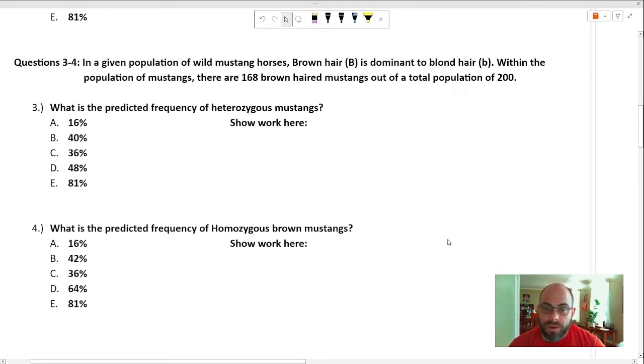And so questions number three and four. In a given population of wild mustang horses, wild mustang - I love all the adjectives in this worksheet. Brown hair is dominant to blonde hair. Okay, good, we know some things. This problem, I love this problem because it deals with some misconceptions that students often make. So let's do this.